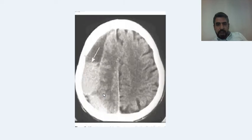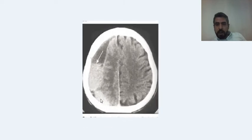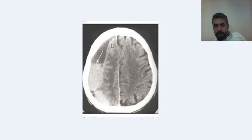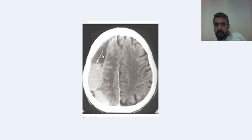Now, what do you think this is? It's a fluid collection between the skull bone and the brain. It has a concave shape, follows the surface of the brain and the shape of the skull bone, indicating a subdural hematoma. It crosses the coronal suture, and it has two densities — fluid and blood density. So there is new bleeding in an old hematoma, indicating an acute-on-chronic subdural hematoma.